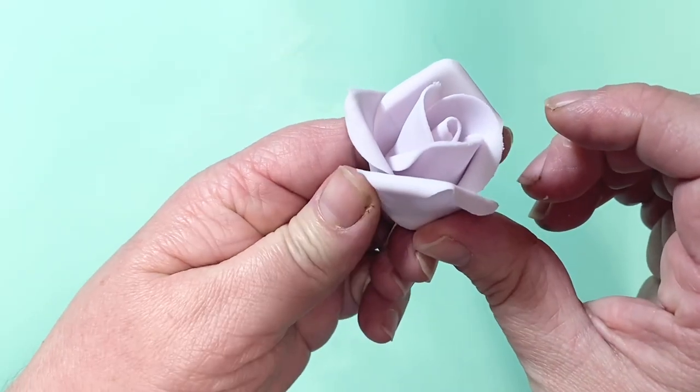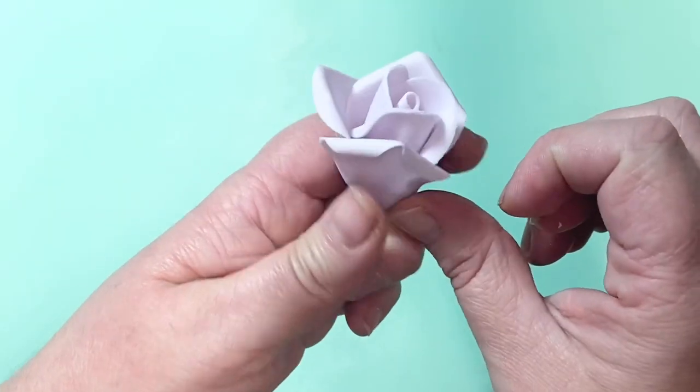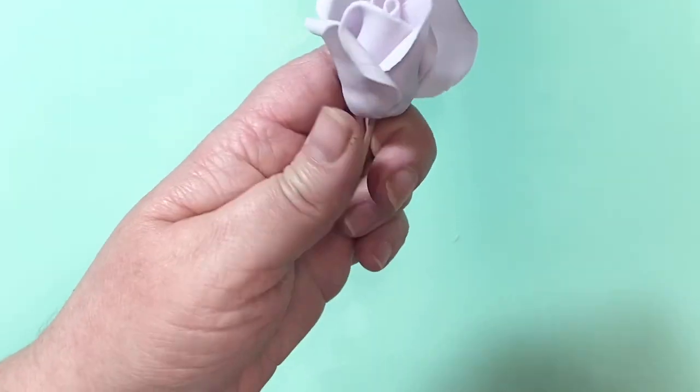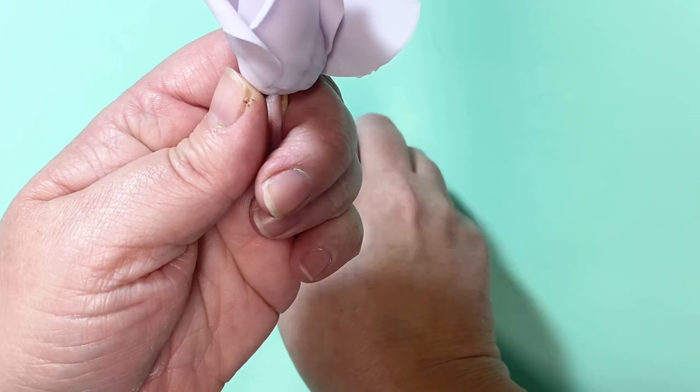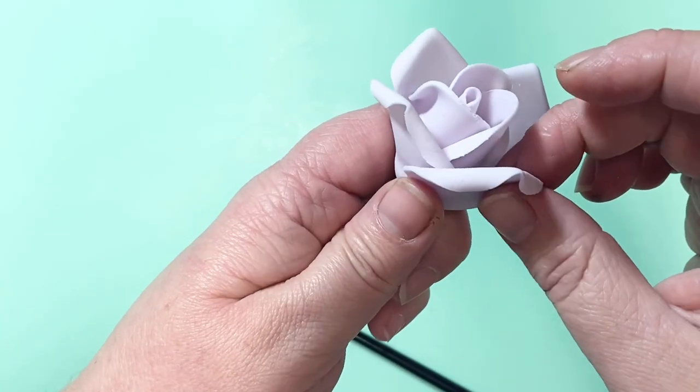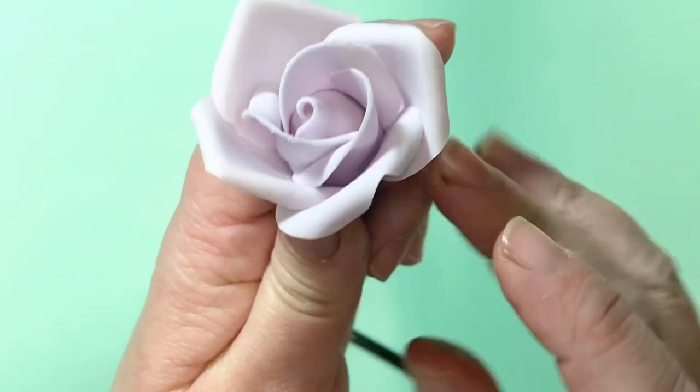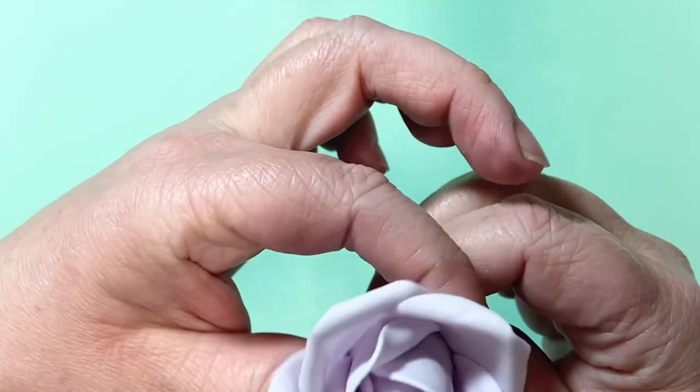Glue again on the bud and around the base, and add your third petal. Now remember to push your first one out a little bit, and you're going to feed the fourth one over and under.